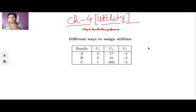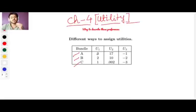Of utility function. So this U1 over here has 3 to 1, U2 is 17, 10, 0.002, and U3 is minus 1, minus 2, and minus 3. Now bundles which we have, a simply A, B, and C. Now just look at these numbers.